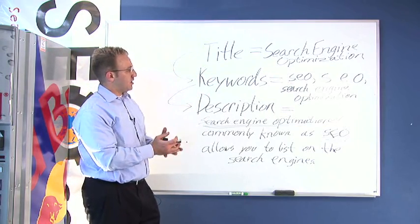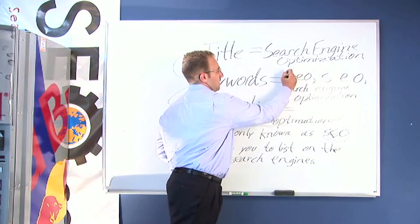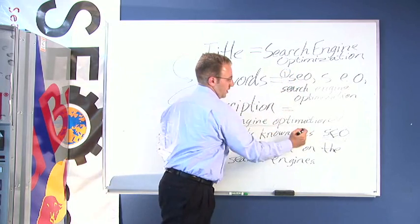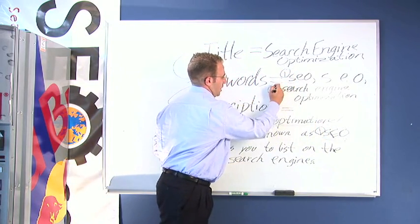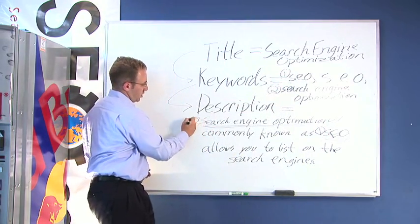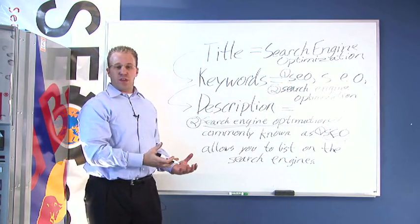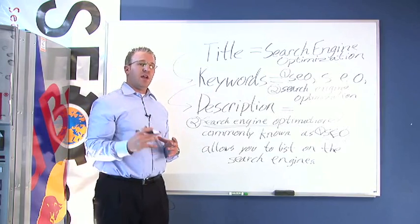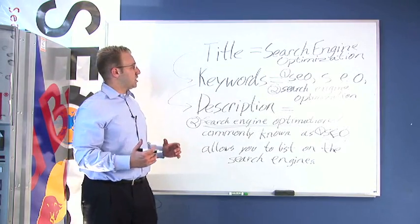If you want to assign numbers or letters to help you organize it, you can say one is SEO, two is search engine optimization — and match those numbers in your description accordingly. Play with it however you like. Like I said, everybody has their own SEO style.